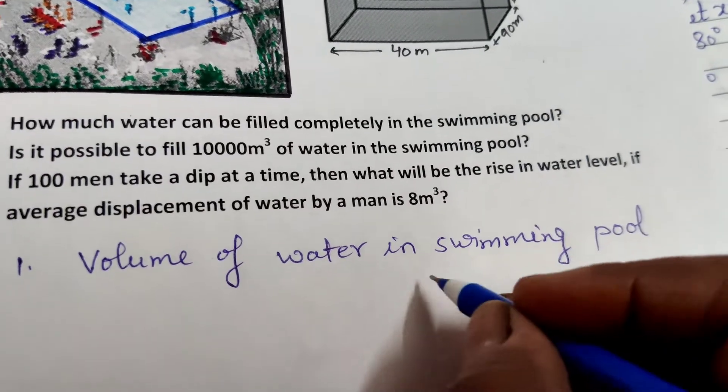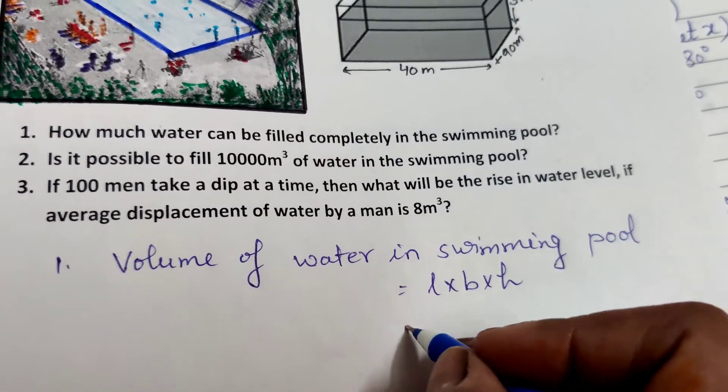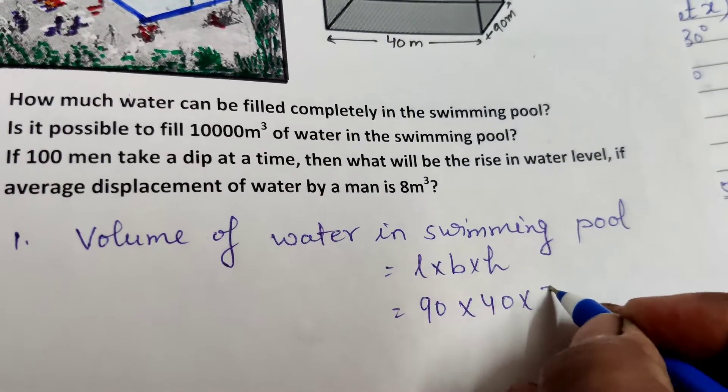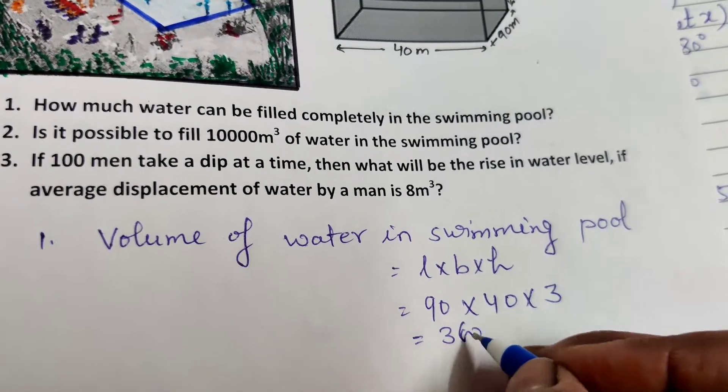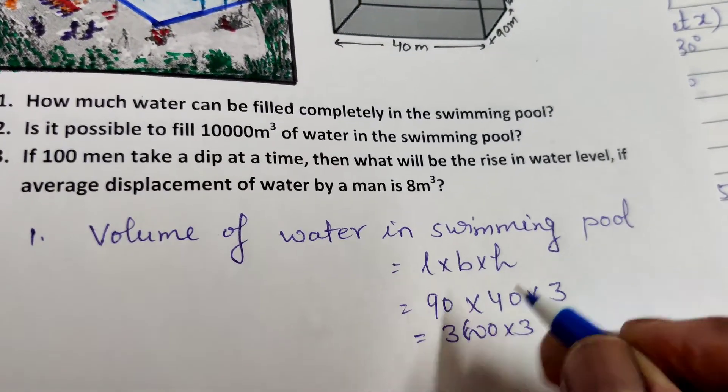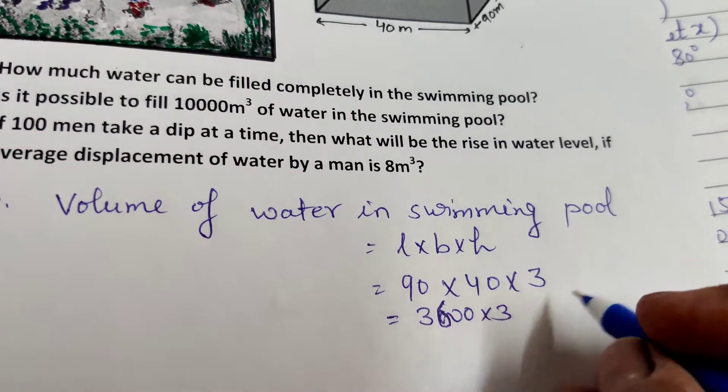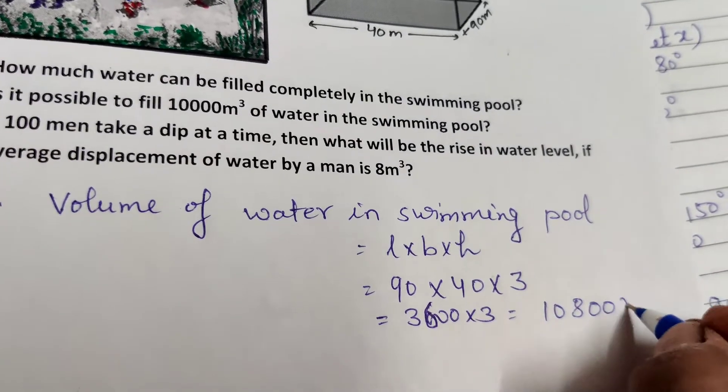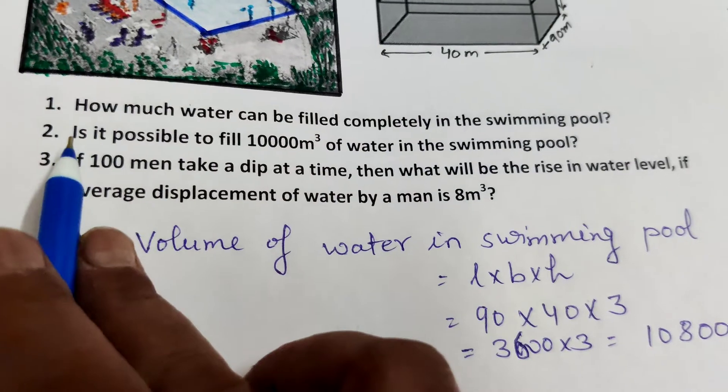3600 into 3 equals 10,800 cubic meters. This is the volume of water in the pool.